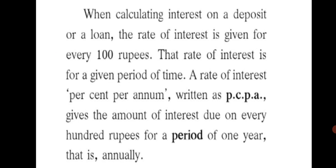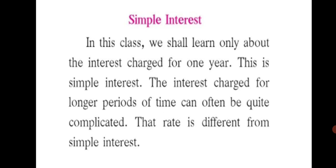Now let's learn what is percent per annum — that is, the rate of interest. When calculating interest on a deposit or loan, the rate of interest is given for every 100 rupees for a given period of time. A rate of interest, i.e. percent per annum written as PCPA, gives the amount of interest due on every 100 rupees for a period of 1 year — annually, yearly. Simple interest in this class refers to the interest charged for 1 year; interest for longer periods can be quite complicated and different from simple interest.